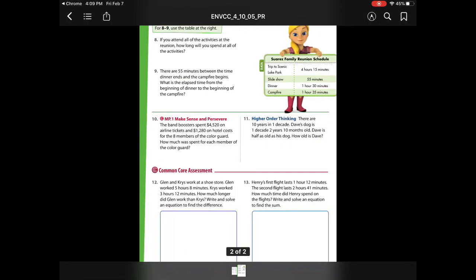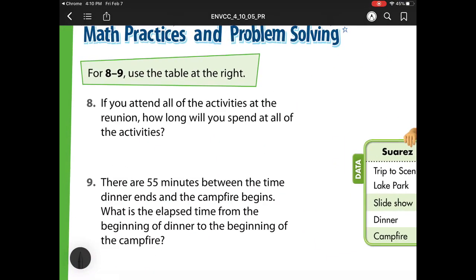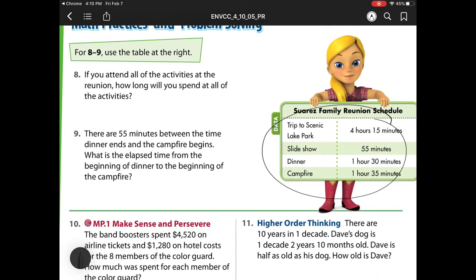Let's head on to the back page. Number 8. Use the table at the right. If you attend all the activities at the reunion, how long will you spend at all the activities? So what I need to do is I need to add my hours along with my minutes. So I have 4 hours 15 minutes, 55 minutes, 1 hour 30 minutes, and then 1 hour 35 minutes. So let's add them all up. So here 5 plus 5 plus 0 plus 5 is 15. Regroup that 1. 1 plus 1 is 2. 2 plus 5 is 7. 7 plus 3 is 10. 10 plus 3 is 13. So I have 135 minutes. And then 4 plus 1 plus 1 is 6 hours.